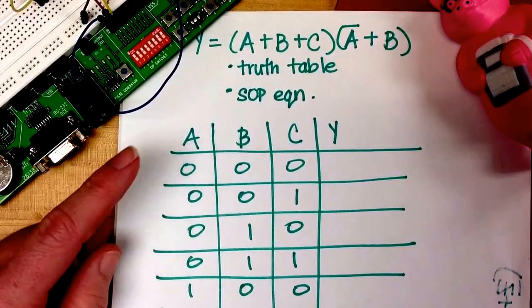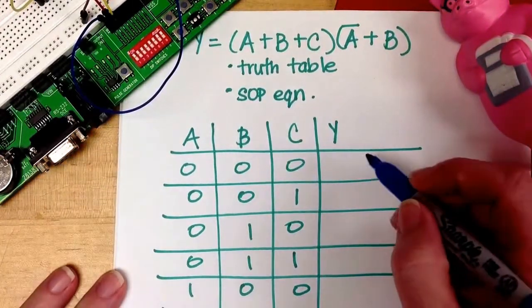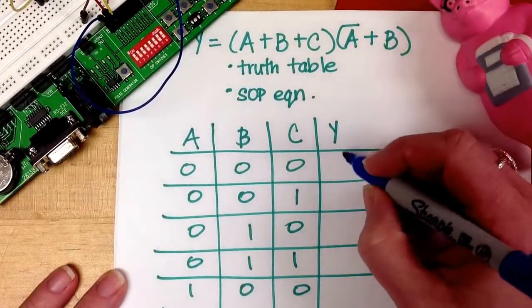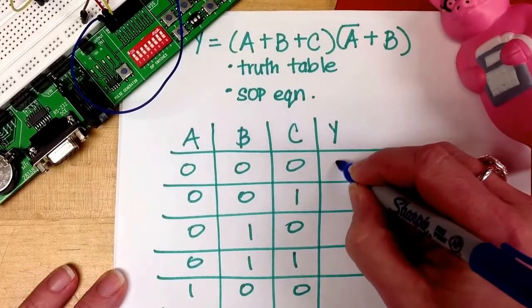So in the first one, I'm looking for A or B or C. Well, that one's not going to be true, 0, 0, 0, so we put a 0 there.